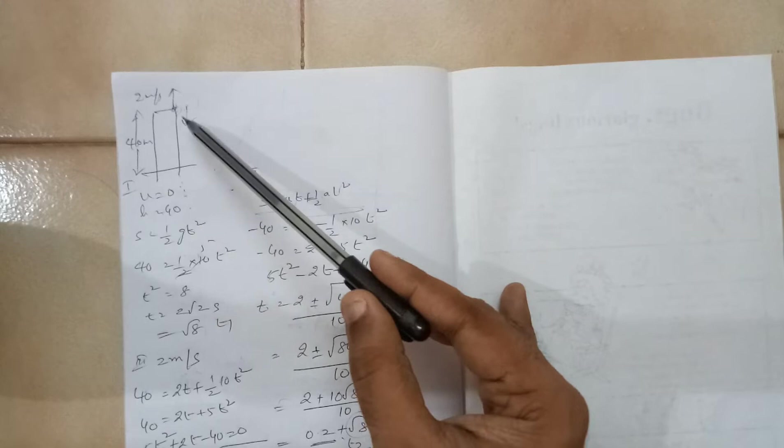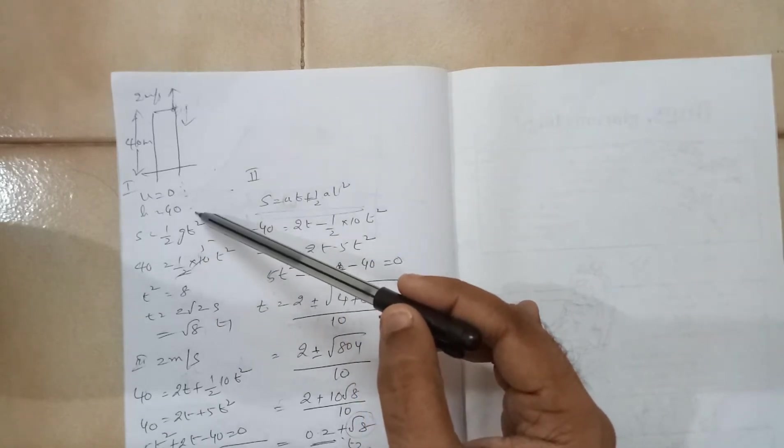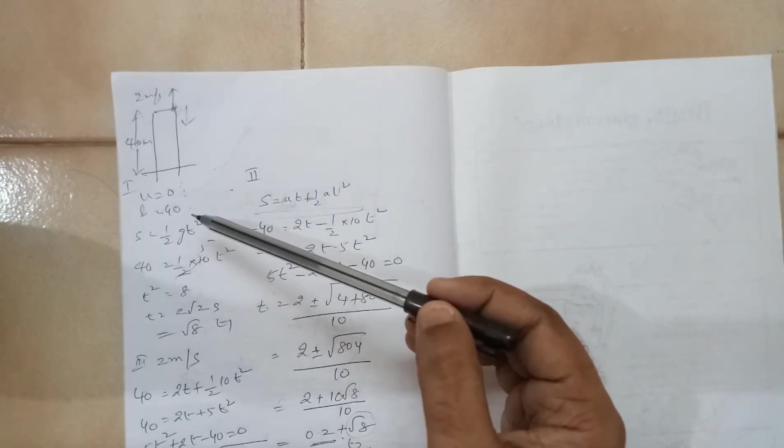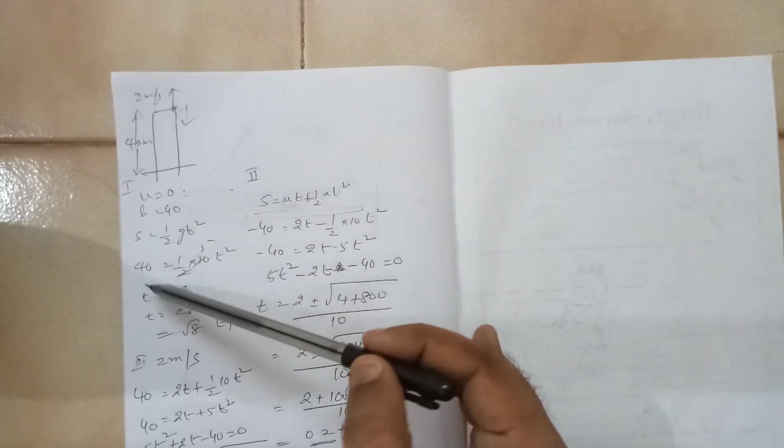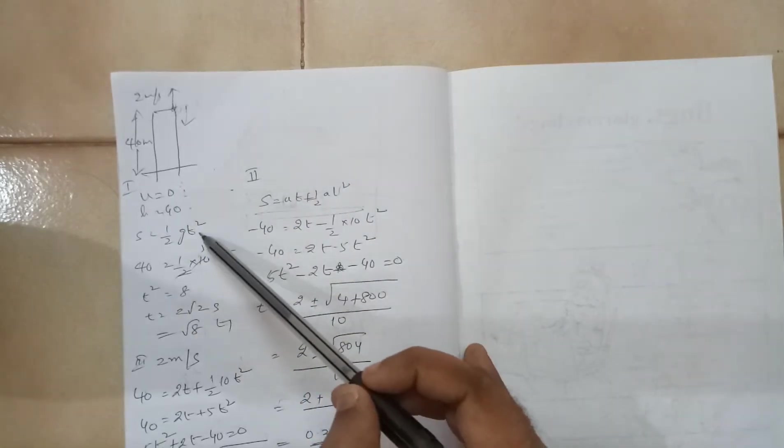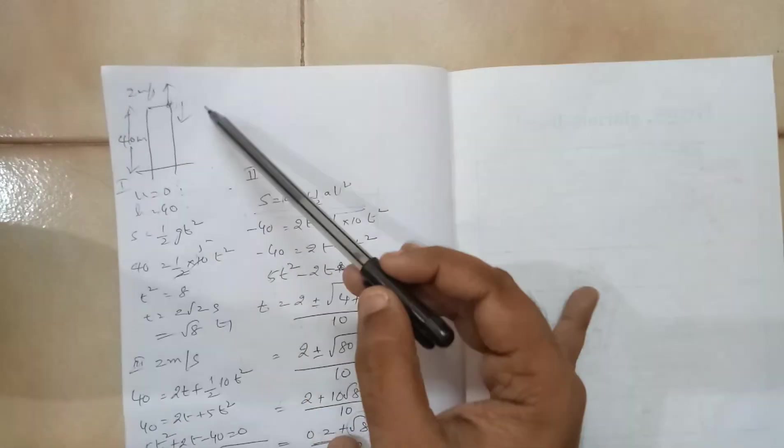Initial speed is equal to 0. Height is 40 meters. And you can use S equals ut plus half g t squared. Because u is equal to 0, ut term will cancel. We can find the time. Time taken by the ball to reach the ground.